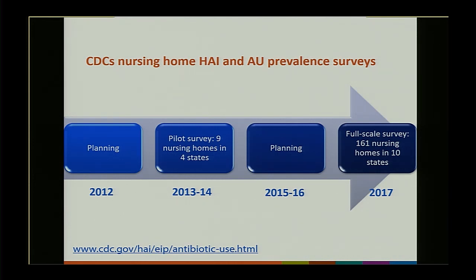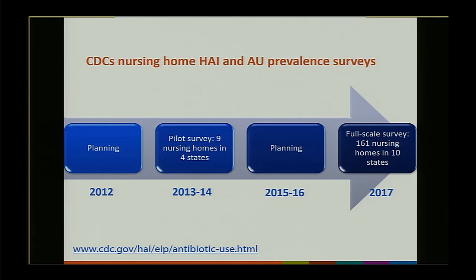This timeline shows CDC's history of doing nursing home prevalence surveys for HAI and antimicrobial use. We started planning in 2012. In 2013 and 2014, we conducted a small-scale pilot of nine nursing homes in four states, which helped us test our data collection forms and methods. After additional years of planning, 2017 was the first full-scale prevalence survey we conducted, performed in 161 nursing homes across 10 different states.